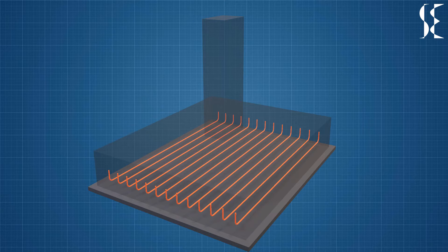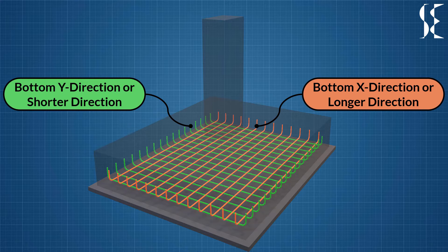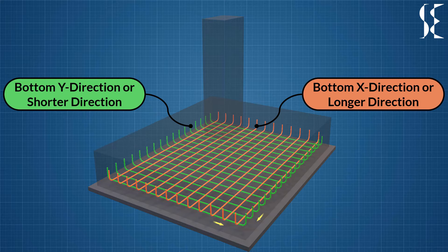Now let us see reinforcement placement in the footing. Rebars at the top of the footing are provided in both the directions which is in X direction and Y direction. Generally, these rebars are of equal size and spacing in both directions but may be different as per analysis and design requirements.